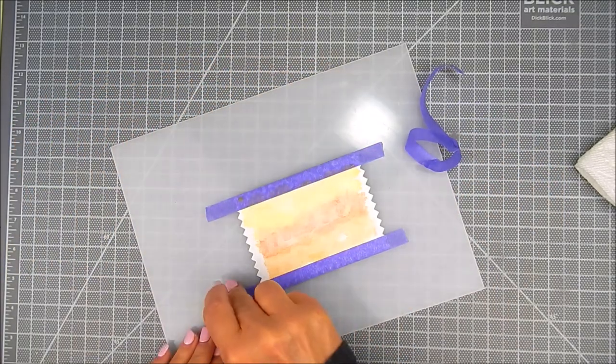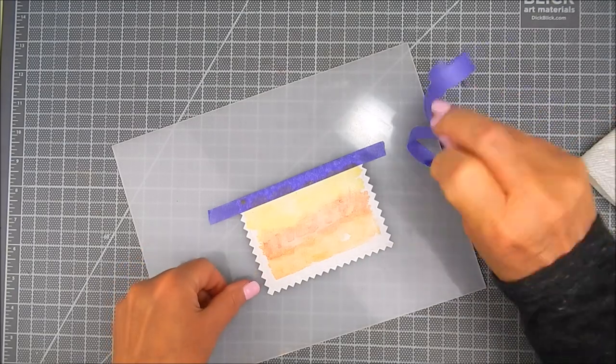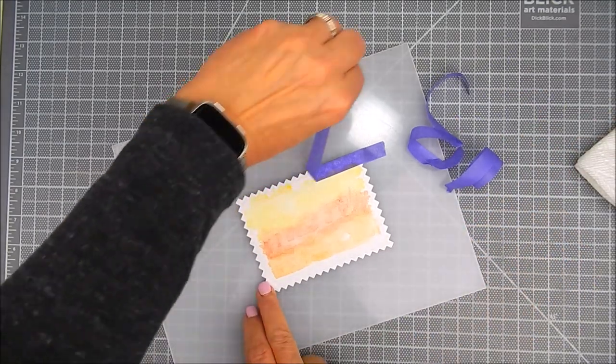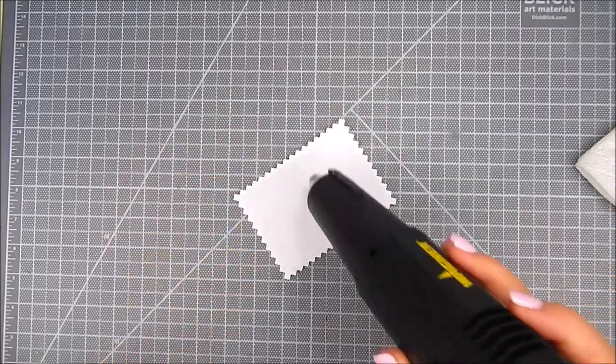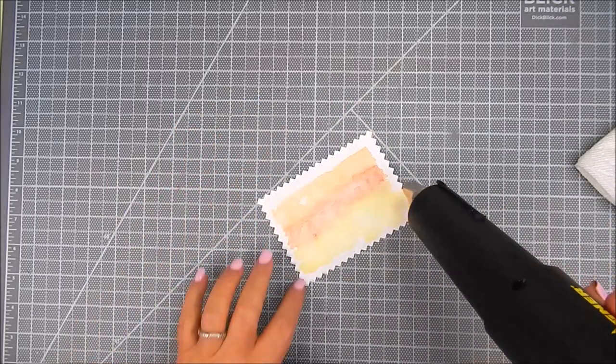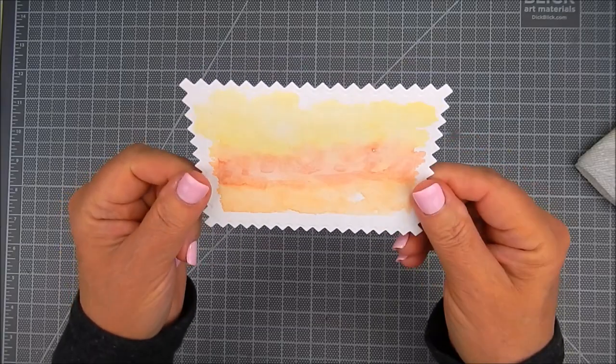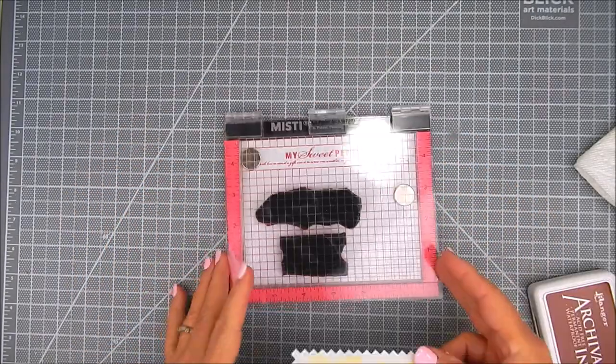I just wanted a rough white area on the edges to have a look of a frame but not being perfect. I heat set it on both sides of the watercolor paper.